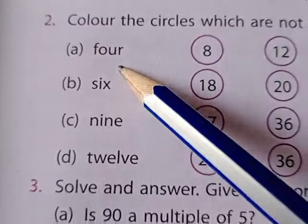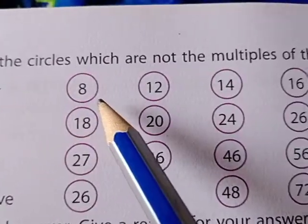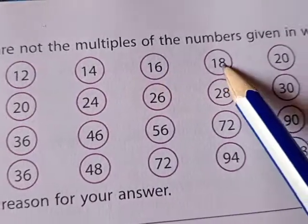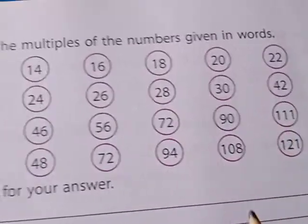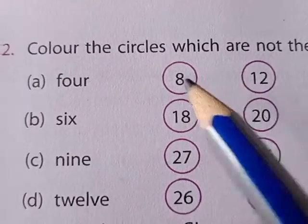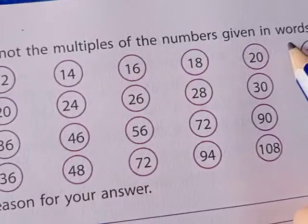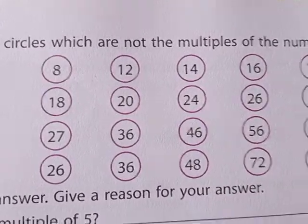You see here we are given a few numbers. For part A, four, among the given numbers which are not the multiples, we have to colour. Not the multiples means in the table of 4, out of these given numbers, which numbers do not come.